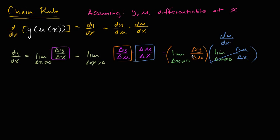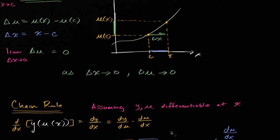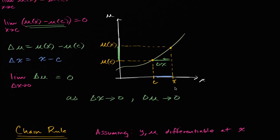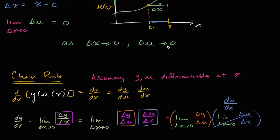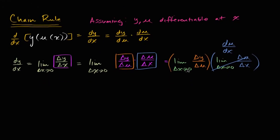Now this right over here, just looking at it the way it's written, we can't quite yet call this dy/du, because this is the limit as delta x approaches zero, not the limit as delta u approaches zero. But we just have to remind ourselves — probably from the previous video — that if we have a function u that is continuous at a point, then as delta x approaches zero, delta u approaches zero. So we can rewrite this: instead of saying delta x approaches zero, that's just going to have the effect — because u is differentiable at x, which means it's continuous at x — that delta u is going to approach zero. As our change in x gets smaller and smaller, our change in u gets smaller and smaller. So we can rewrite this as our change in u approaches zero.